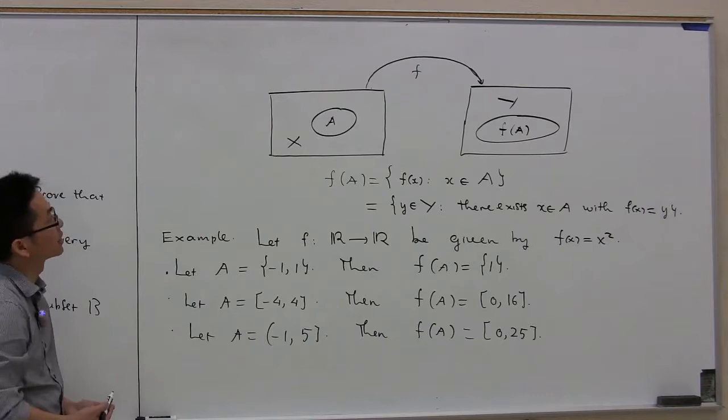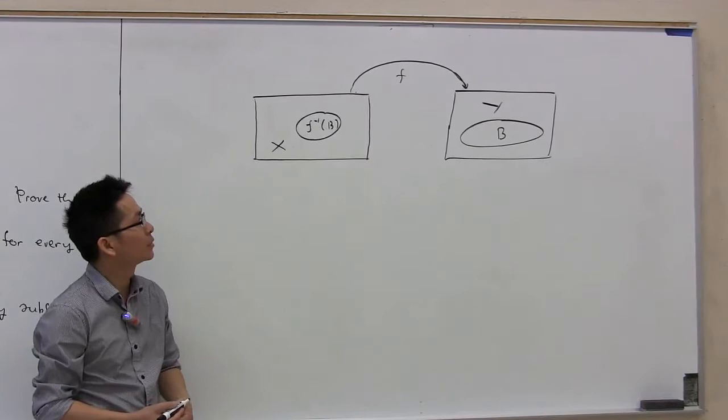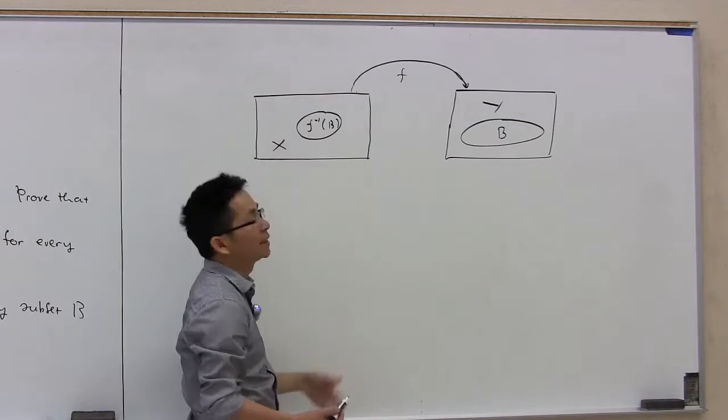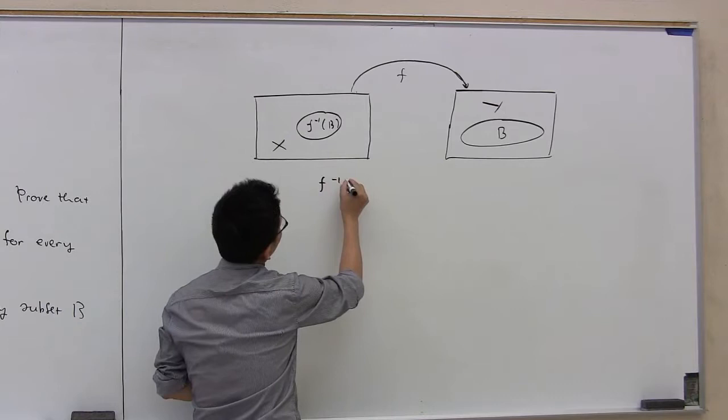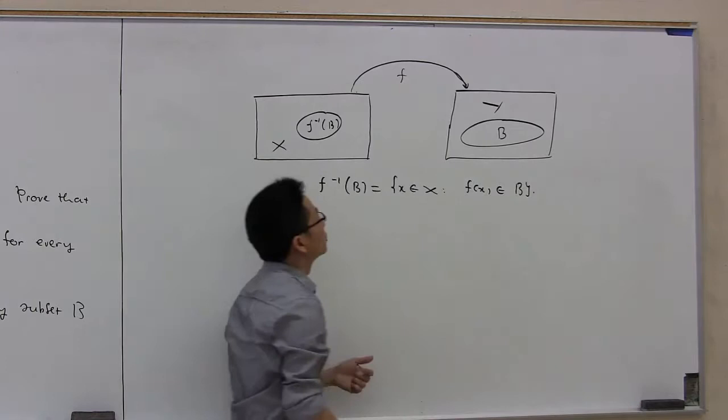That covers the first concept — the image of a set under a function. Now the second concept used to solve the problem is the inverse image of a set under a function. Here, f is a function from X to Y and B is a subset of Y. f inverse of B is a subset of X, defined as: f inverse of B consists of all x in X such that f of x belongs to B.